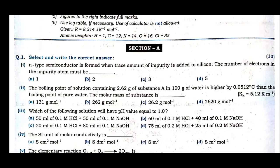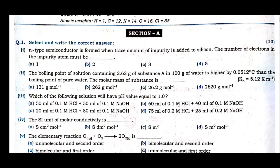The second MCQ is from chapter 2: the boiling point of a solution containing 2.62 grams of substance in 100 grams of water is higher by 0.0512°C than pure water. Find the molar mass of the substance. This is a colligative property — elevation of boiling point. The formula is ΔTb = Kb × w2 / (w1 × M2). Mass of solute, mass of solvent, ΔTb = 0.0512°C, and Kb are given. Substituting values gives the molar mass.